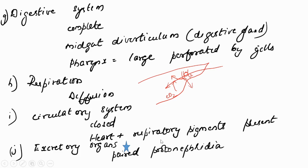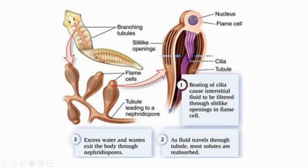The circulatory system is closed — meaning it has a heart and blood vessels. Respiratory pigments are also present, like hemoglobin and some other pigments. Regarding excretion: it is done by paired protonephridia. The protonephridia extend throughout the body from anterior end to posterior end.